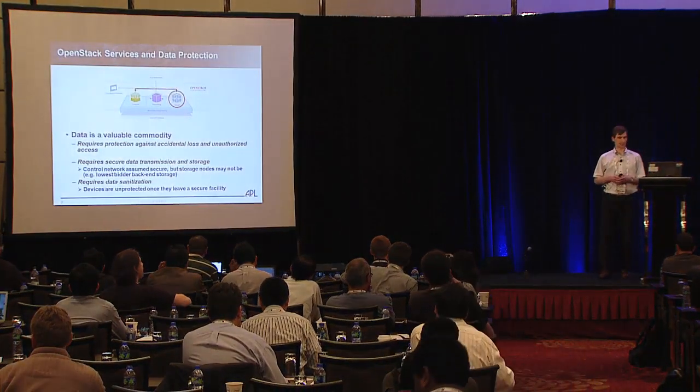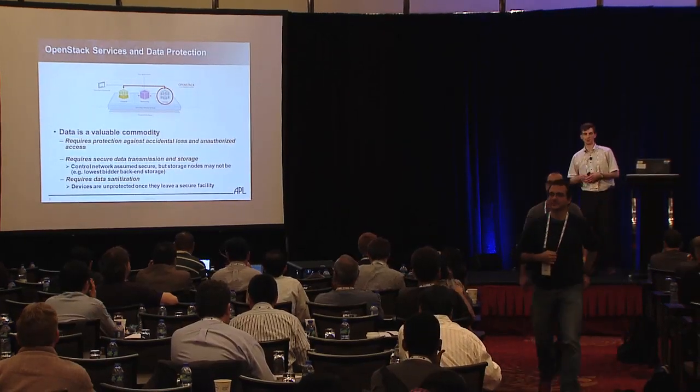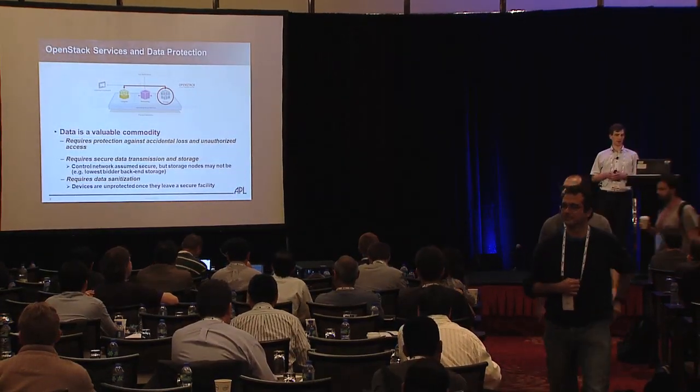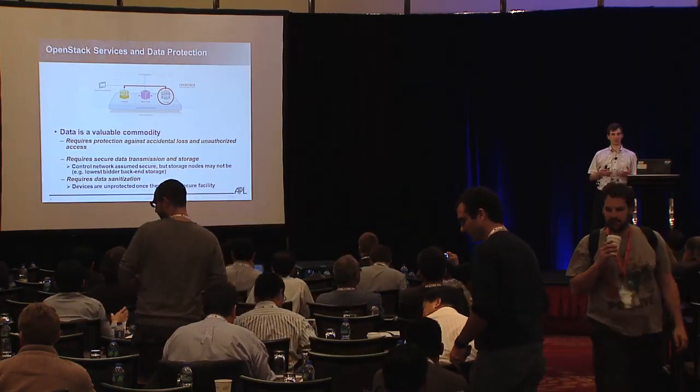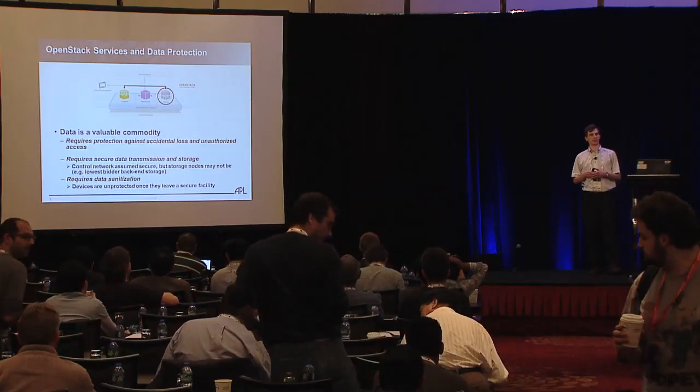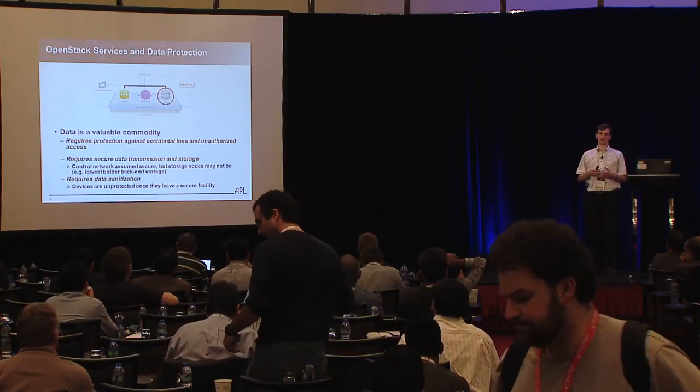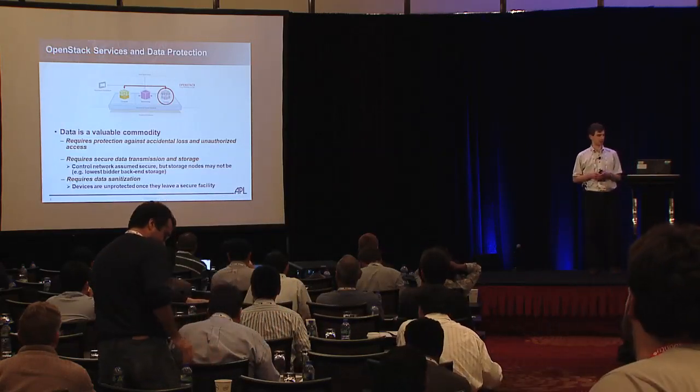It turns out that volume encryption doesn't work very well if you don't have good keys. Just an overview on OpenStack data protection and why we're trying to do this work. Data's a pretty valuable commodity for most enterprises — they want to protect their patents and intellectual property. There's great interest in making sure we protect data against both accidental loss and unauthorized access, and things the users can do to ensure this is also critical.